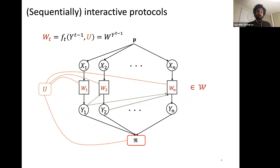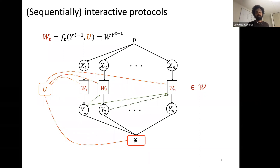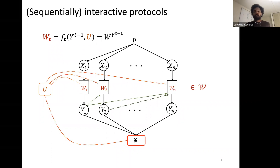A much more complex class of protocols is called sequentially interactive protocols, where the users go one at a time and the t-th user chooses its channel not only as a function of the public randomness but also of all the messages that have been transmitted before it. So w_t is a function of y_1 up to y_{t-1} and u, sometimes written as w_{y^{t-1}}.